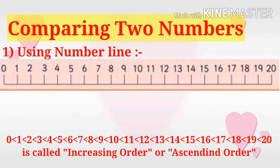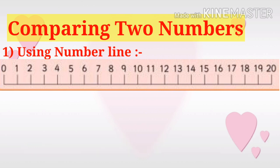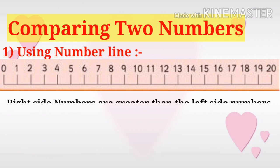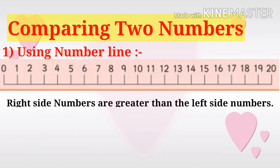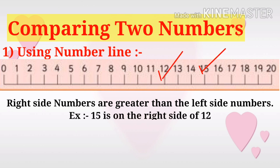This continues up to less than 20. This is called increasing order or ascending order — that is, numbers arranged from small to big. On the same number line, observe that right side numbers are greater than the left side numbers.